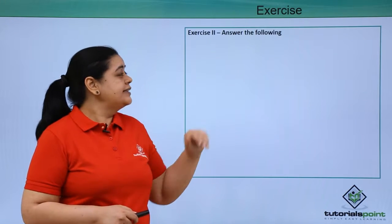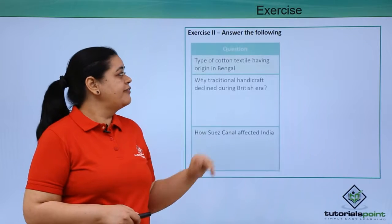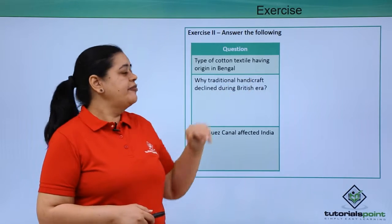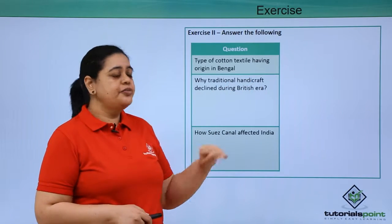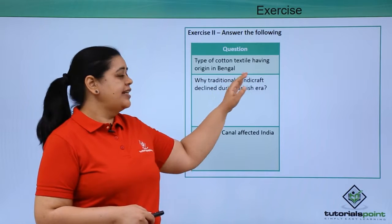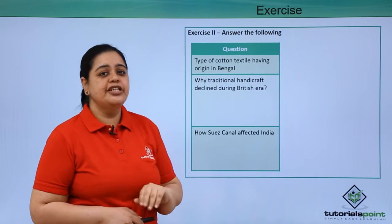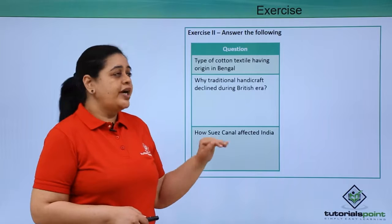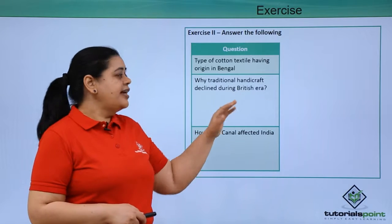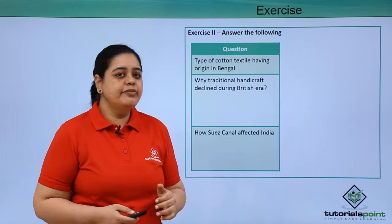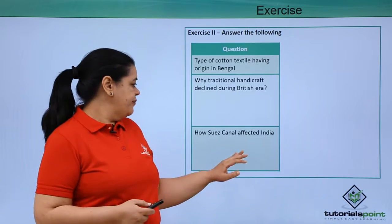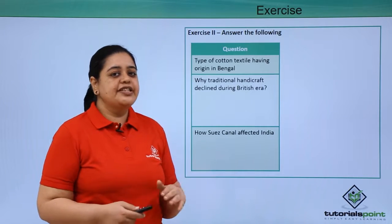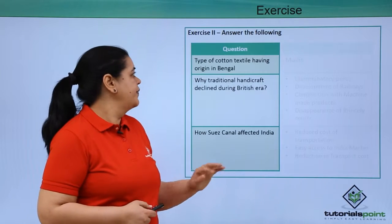Now let's see the second set of questions. We have been asked to mention the type of cotton textile having its origin in Bengal. Then we have been asked why traditional handicrafts declined during the British era. And the third question is how the Suez Canal affected India.